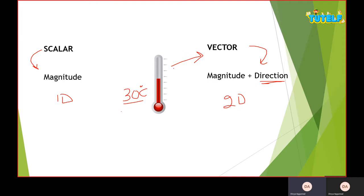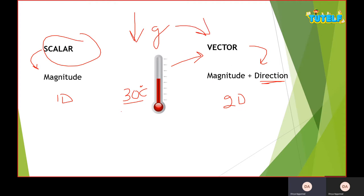Let's do a quick revision. Mass does not have a direction associated with it, so mass is a scalar quantity. But weight is mass times acceleration due to gravity, and since acceleration due to gravity acts in the downward direction, weight becomes a vector quantity.